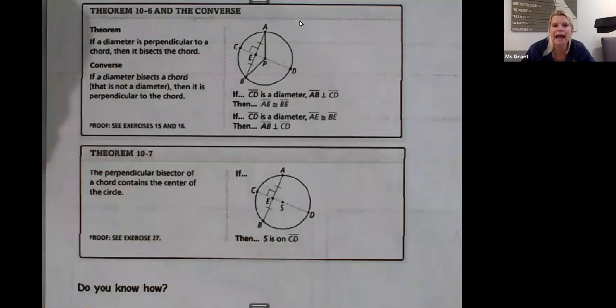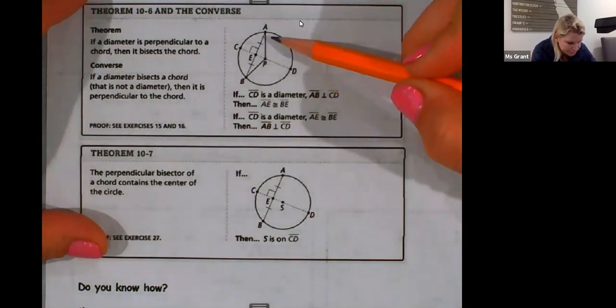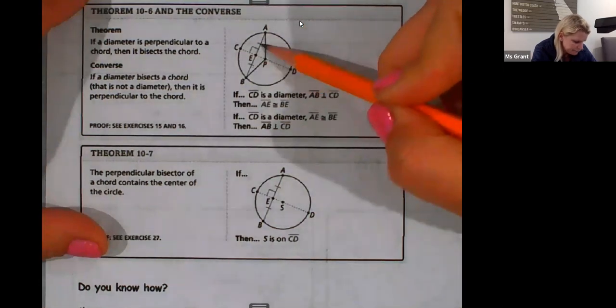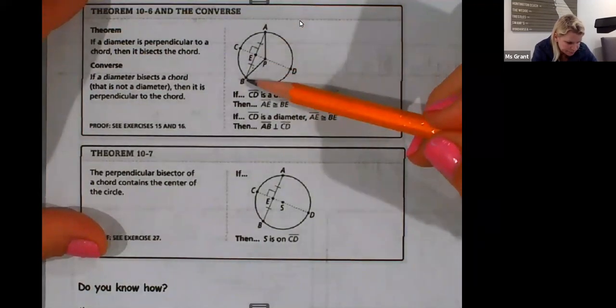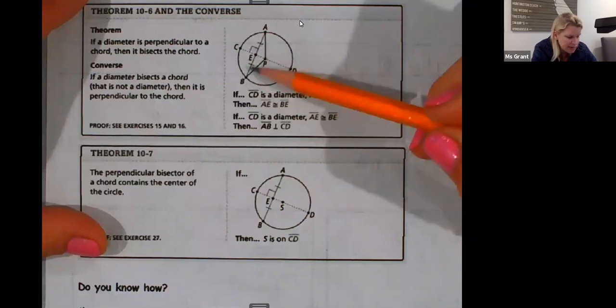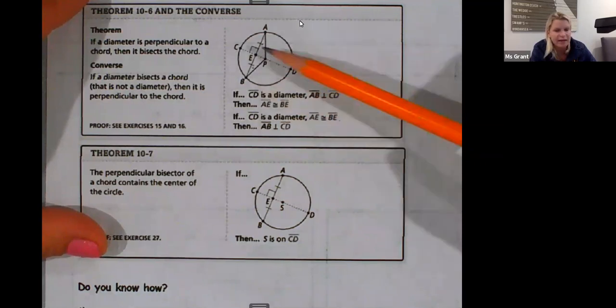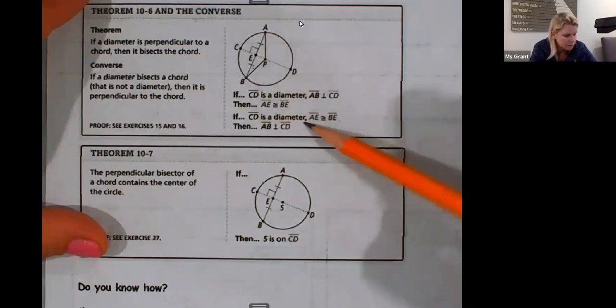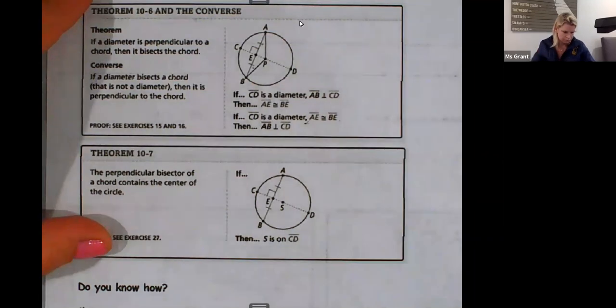So there's a lot of chord info. Let's do some more. Right. If a diameter is perpendicular to a chord, then it bisects the chord. So this dotted line is going to be my diameter. And then it bisects. Well, first it's perpendicular to a chord. And then it bisects it. So that's good. Likewise, if I flipped it, if a diameter bisects a chord, then it is perpendicular. So this all says it right here. CD is my diameter. AB is perpendicular to CD. Then AE and BE are congruent. If CD is a diameter and AE is congruent to BE, then I have perpendicular lines.